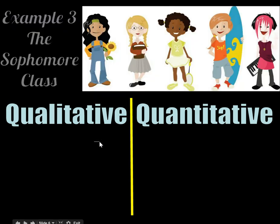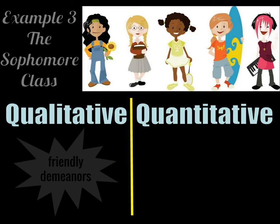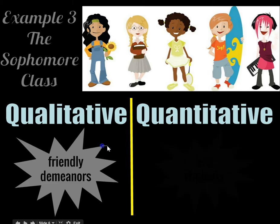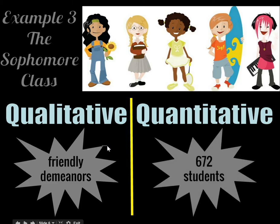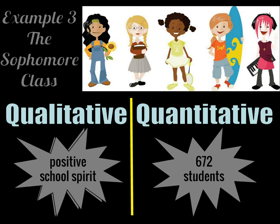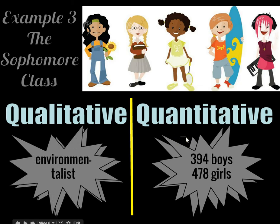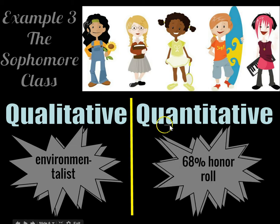Let's do one more example — let's talk about the sophomore class. A qualitative would be that you guys have friendly demeanors. A quantitative would be that there are 672 students. A qualitative would be that you guys are all environmentalists — you're really big on recycling. A quantitative would be that 68% of you guys are on honor roll.